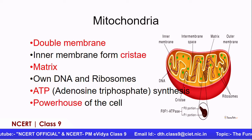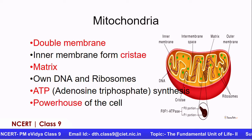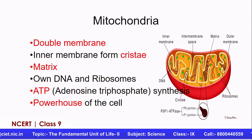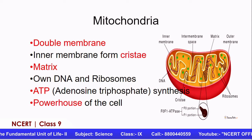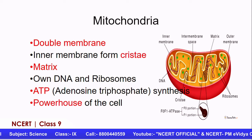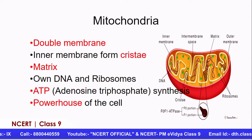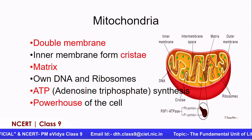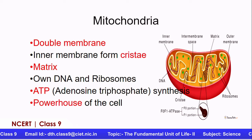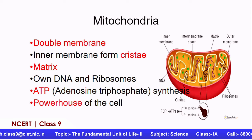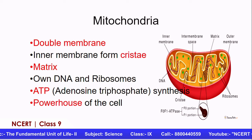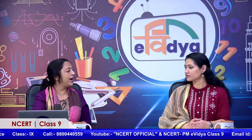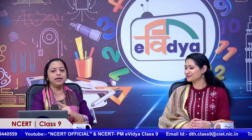Till now we talked about organelles surrounded by a single layer. Now, mitochondria is surrounded by a double membrane — an outer membrane and an inner membrane. The inner membrane is extended in the form of cristae. Very interestingly, mitochondria has its own DNA and ribosomes and can synthesize many of its own proteins. It is the powerhouse of the cell because it supplies ATP, which is the energy for the cell — very important for carrying out many different processes.